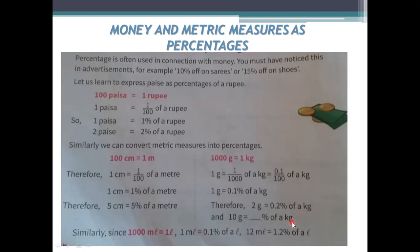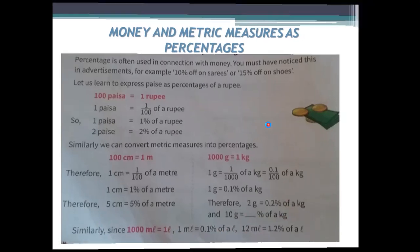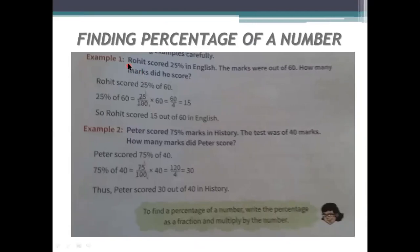Similarly, since 1000 milliliters equals one liter, one milliliter equals 0.1 percent of a liter, and 12 milliliters equals 1.2 percent of a liter. Next: finding the percentage of a number. For example, Rohit scored 25 percent in English and the marks were out of 60. How many marks did he score?